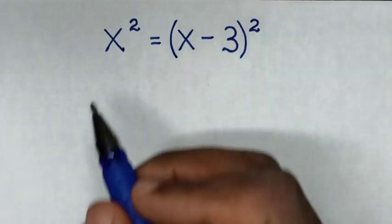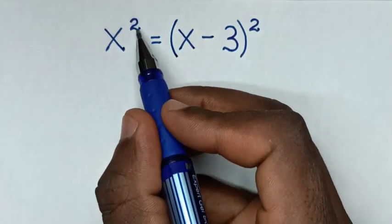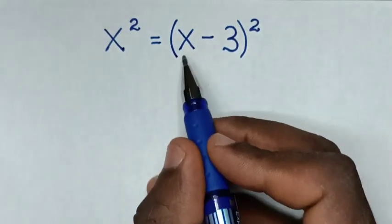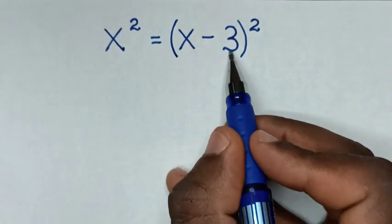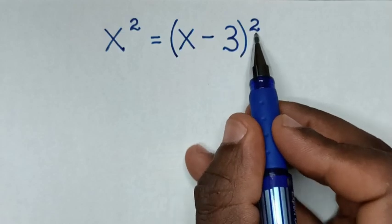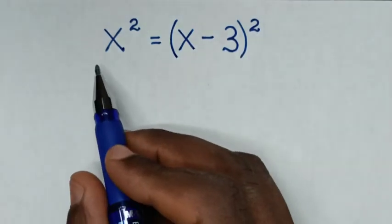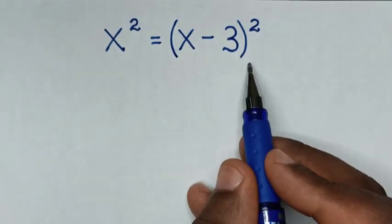Hello, how to solve x squared is equal to x minus 3, bracket squared, to find the value of x from this equation.